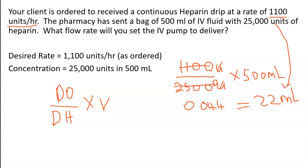Let's recap. The order is 1,100 units. The pharmacy sends 25,000 units in 500 ml, and they want to know what you would set the flow rate at. The formula is dose order over dose on hand times the volume. 1,100 divided by 25,000 gives you 0.044. Multiplied by 500 ml, you get 22 ml — so you set the flow rate at 22 ml.